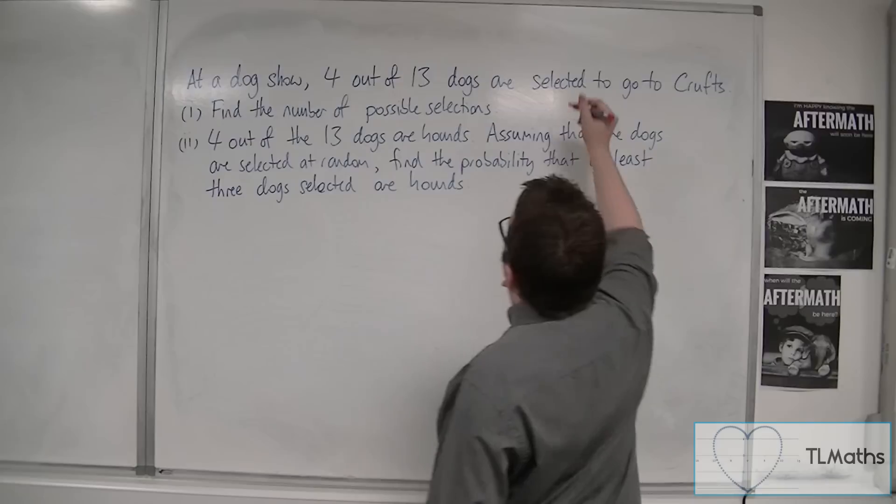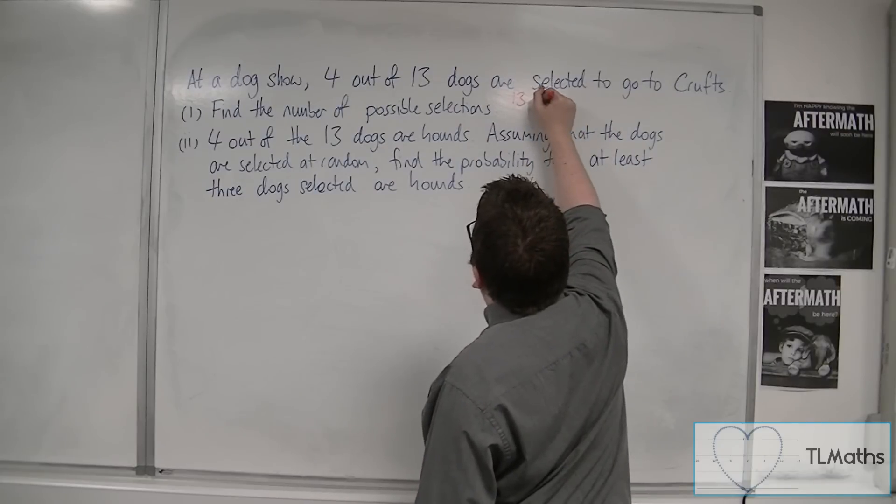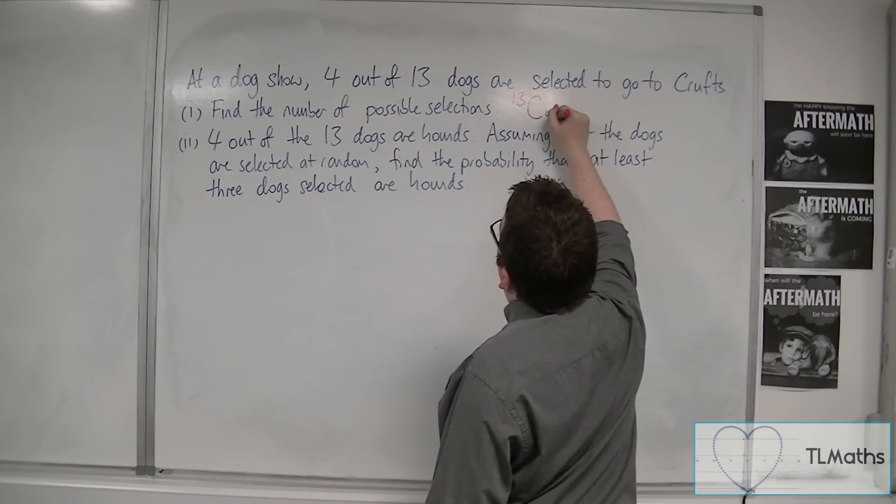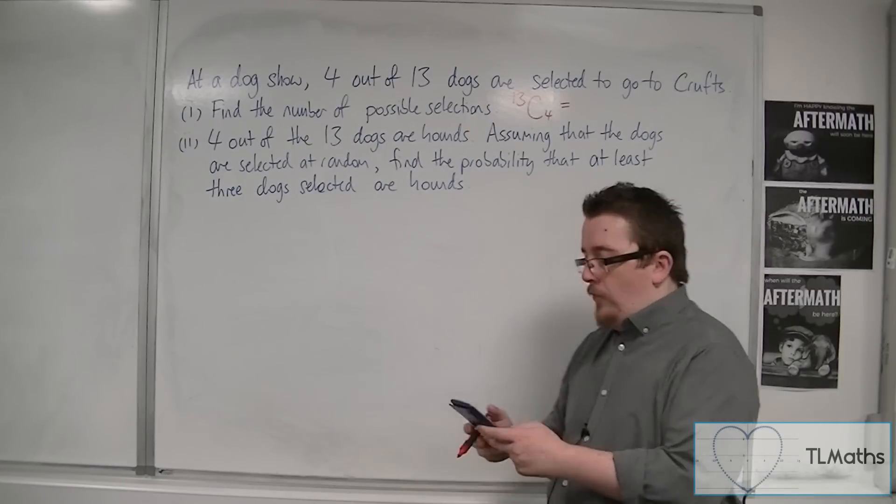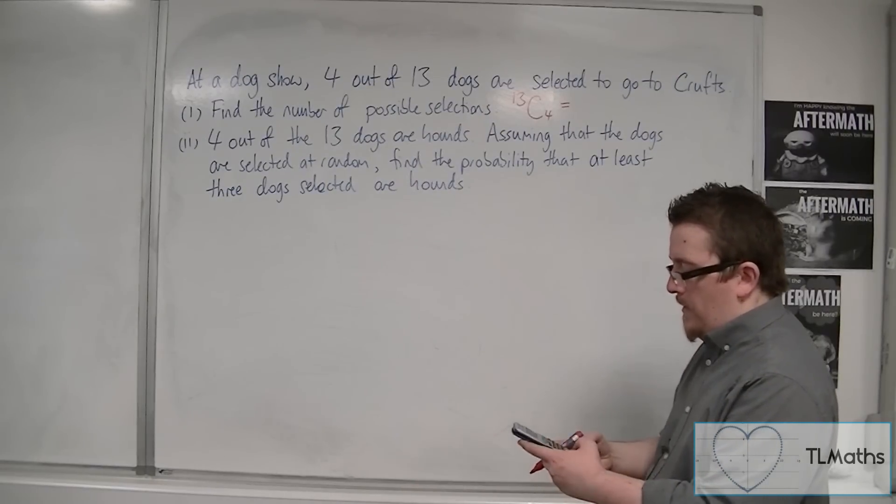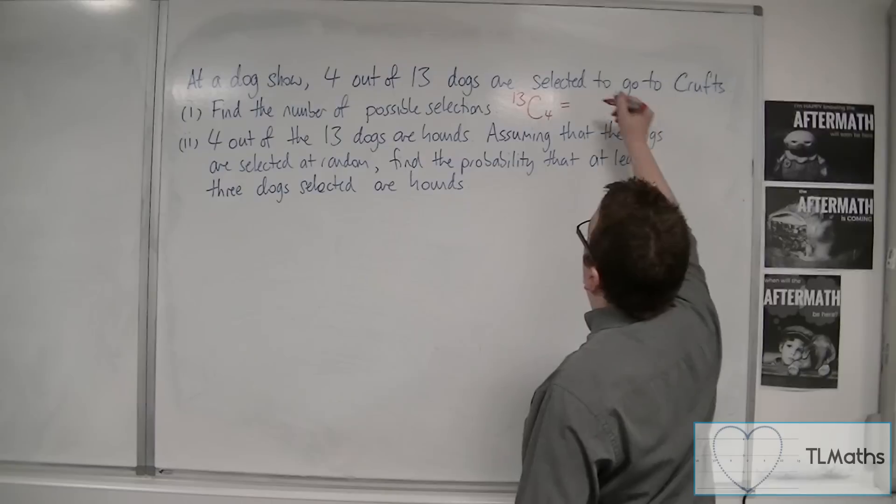So, out of 13 dogs, we are choosing 4 of them. So, 13 NCR 4. So, 13, NCR button 4, and that gets me 715.